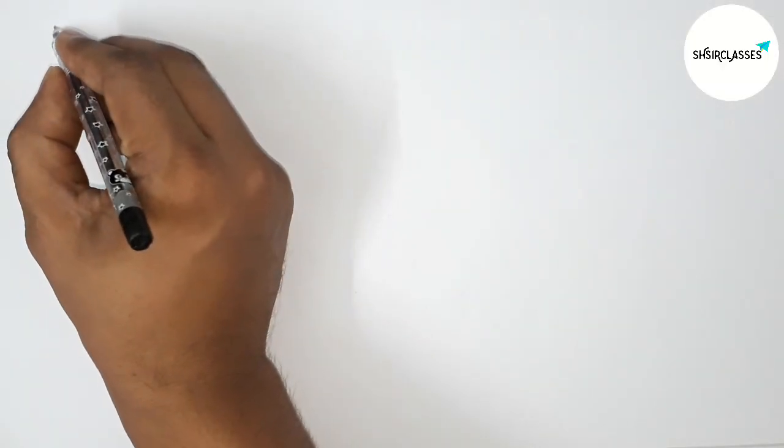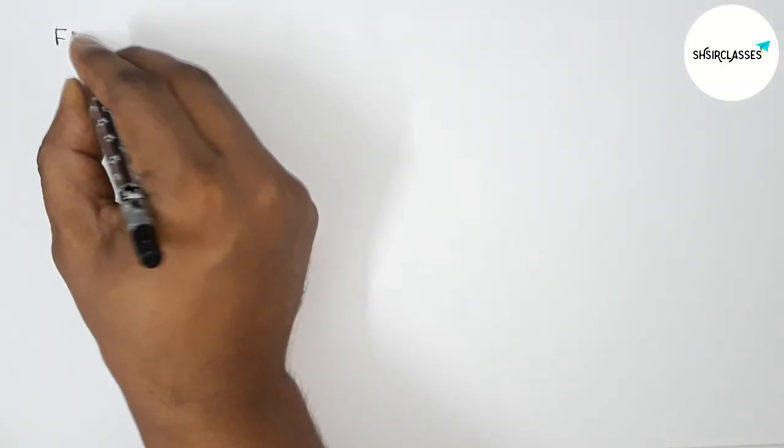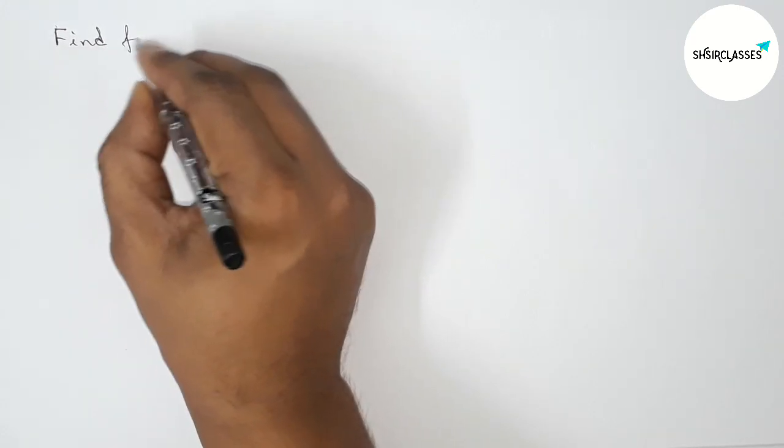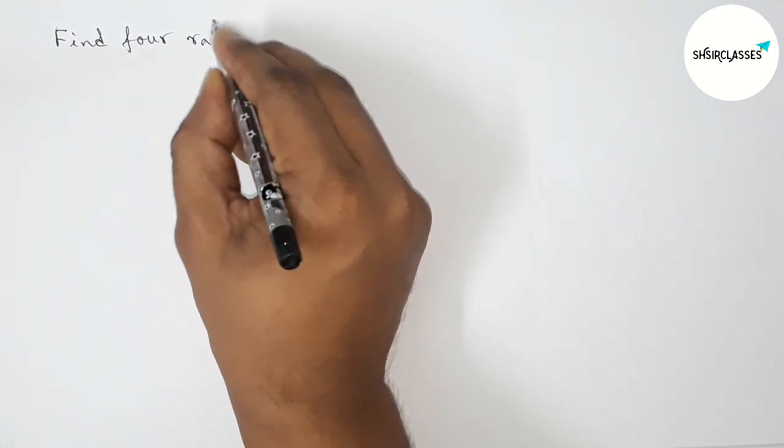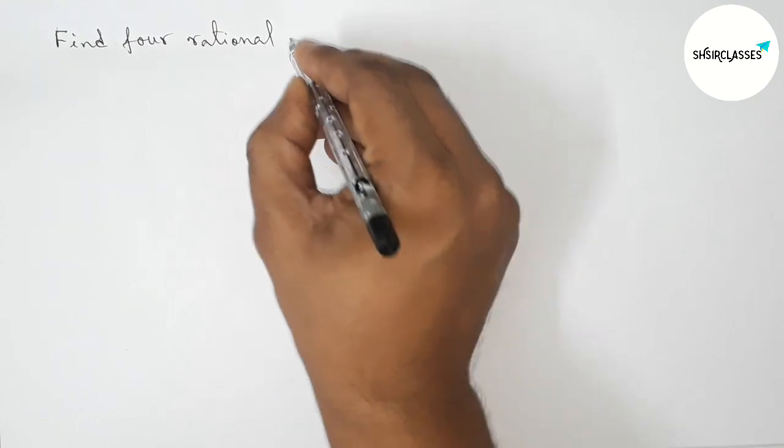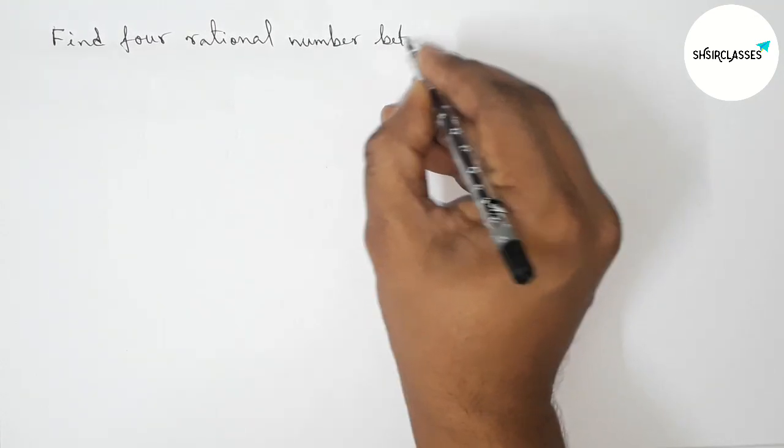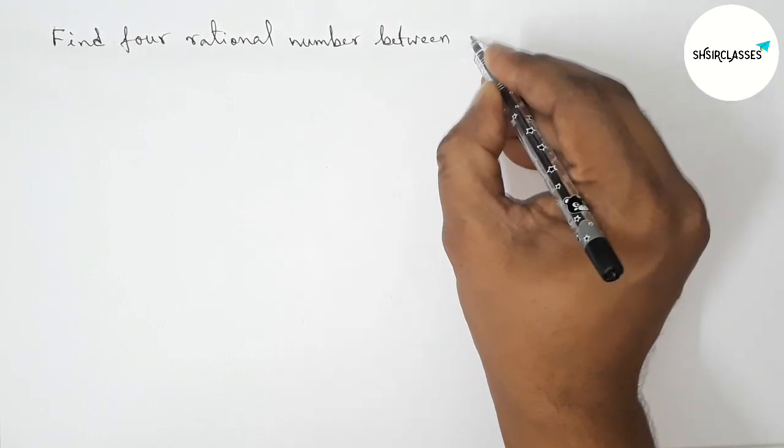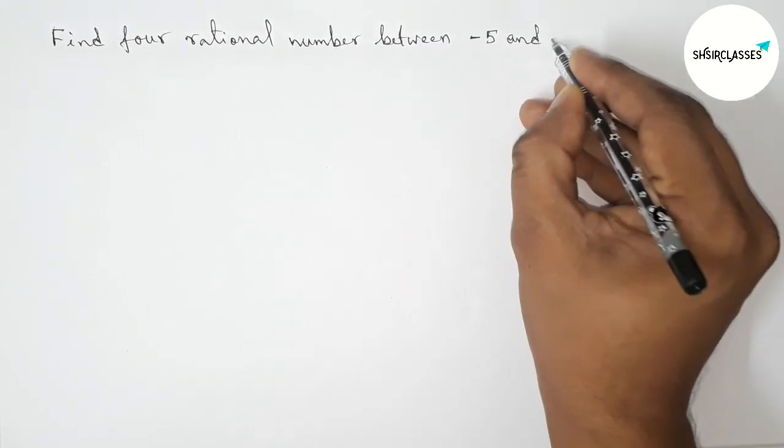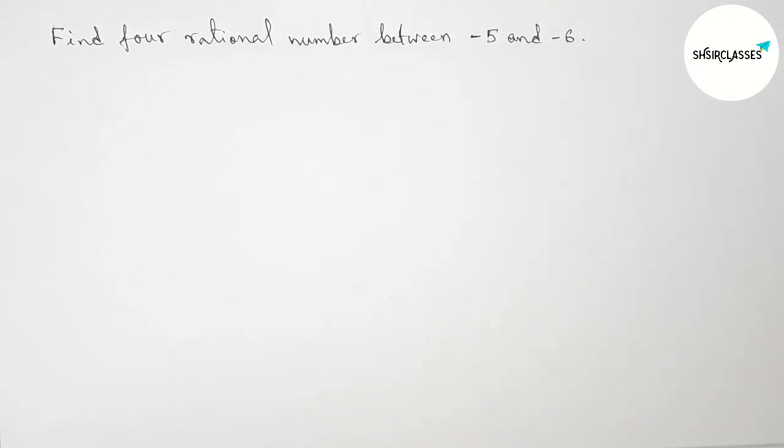Hi everyone, welcome to SI Share Classes. Today in this video we have to find four rational numbers between minus 5 and minus 6 in an easy way. So please watch the video till the end. So let's start the video.